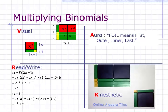Aural learners should recite the mnemonic FOIL — F-O-I-L — which means First, Outer, Inner, and Last. Read-write learners will do best if you stick to the algebraic expressions.